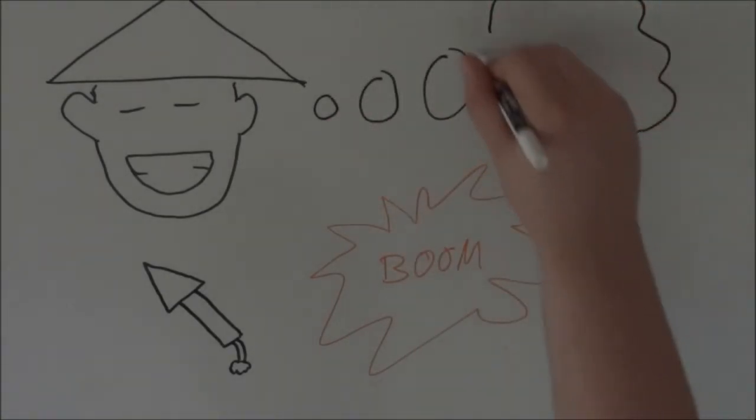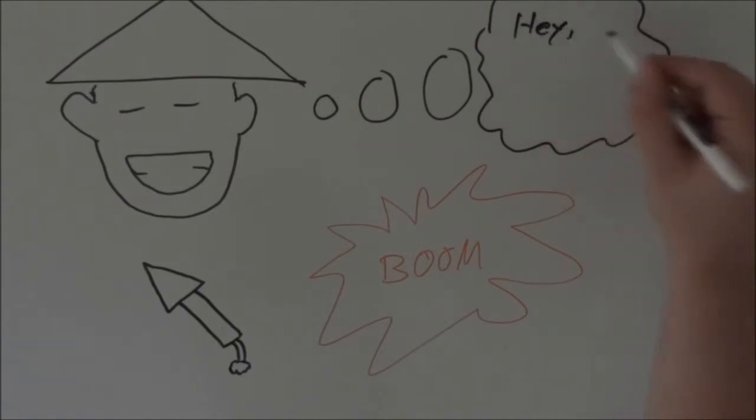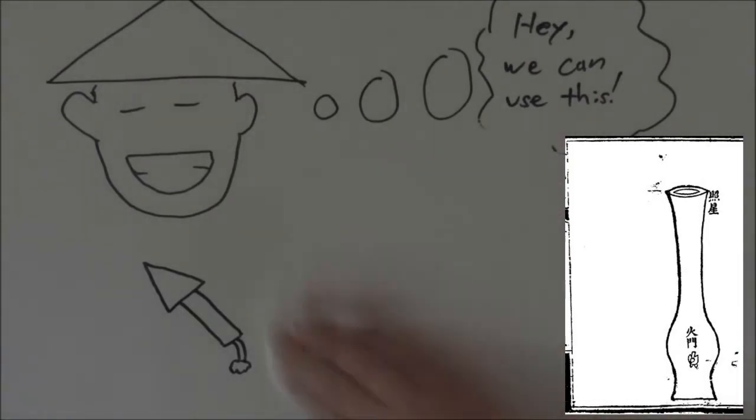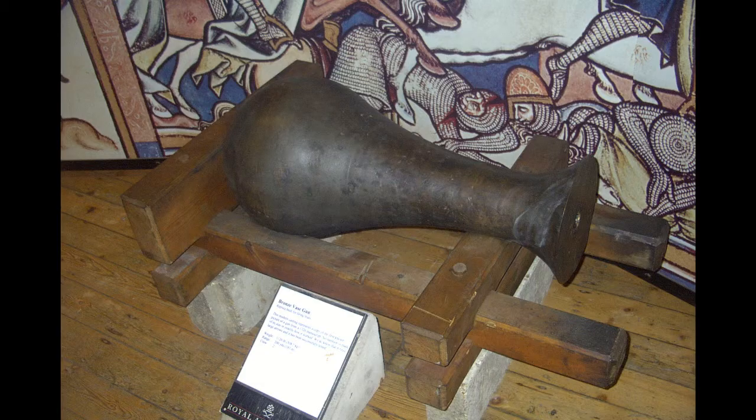Eventually, they decided, hey, you know, we can use this to propel things. And they created the first cannon, called the Vase Cannon. And as its name suggests, it looks like a vase. It has a long neck with a larger opening, and a chamber in the back that stores a lot of black powder. And a projectile was loaded in.